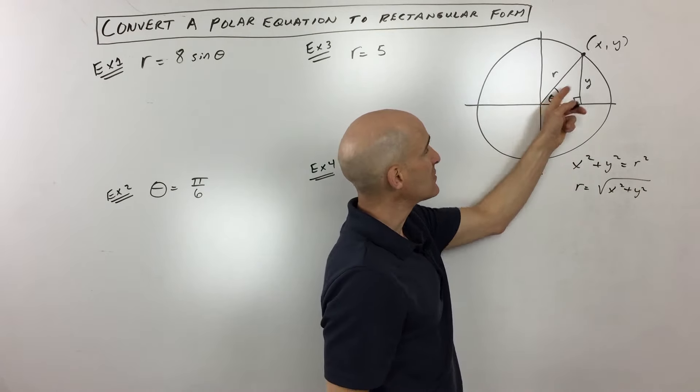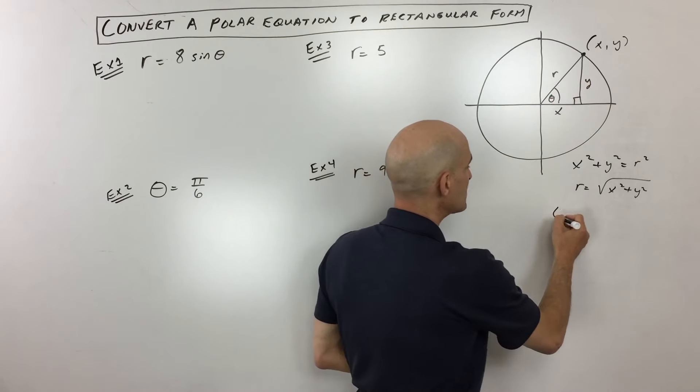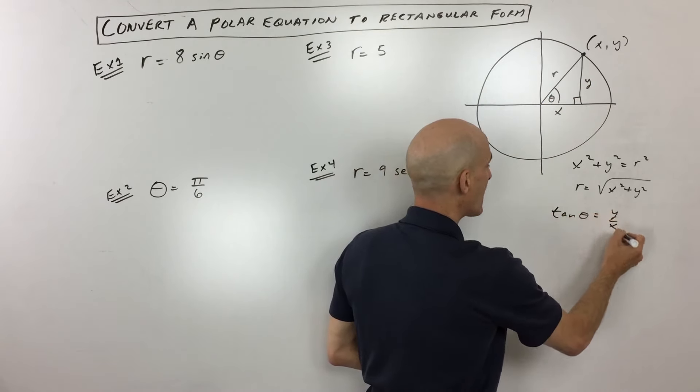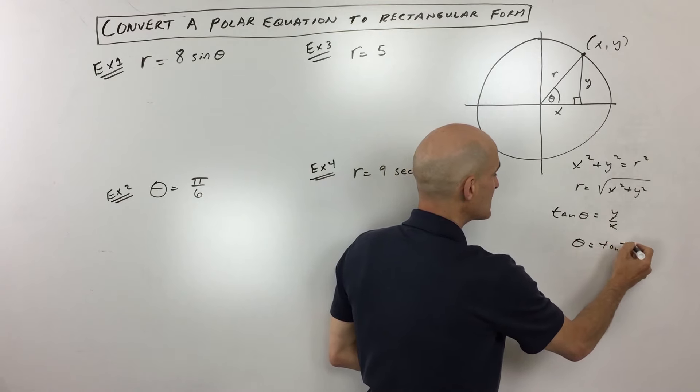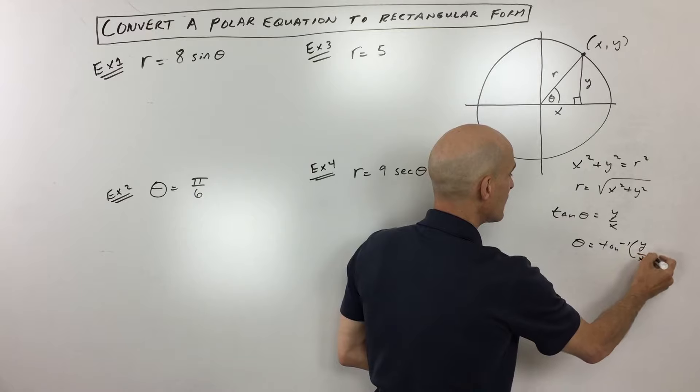Also, we've got the tangent of theta equals opposite over adjacent, so tangent of theta equals y over x. And if you take the tangent inverse of both sides, you can see that theta is equal to the tangent inverse of y over x.